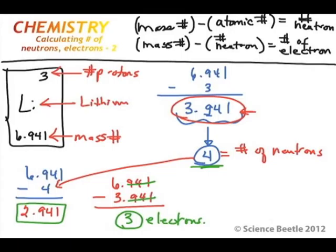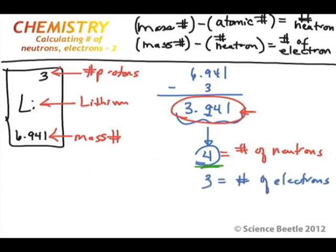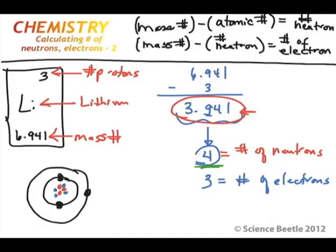Now the next step is to draw the Bohr structure for this element. We've got 3 protons — I'll use red for protons — so 1, 2, 3 protons. Then 4 neutrons: 1, 2, 3, 4. And 3 electrons: in the first orbital there are 2 electrons, then we go into the second orbital for the 3rd electron. This is the structure for lithium.